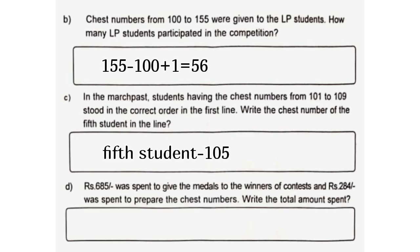D. Rupees 685 was spent to give the medals to the winners of the contest, and Rupees 284 was spent to prepare the chess numbers. Write the total amount spent. 685 plus 284 is equal to 969 Rupees.